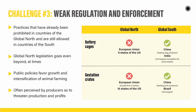Challenge number three is weak regulation and enforcement. Many practices we see have already been banned in Global North countries but are still allowed and widespread in the Global South. For example, battery cages and gestation crates.